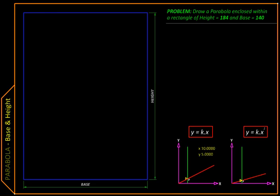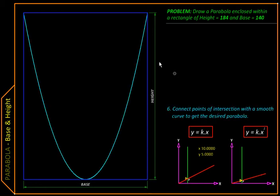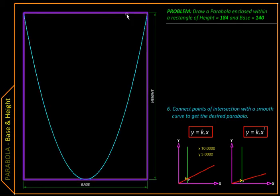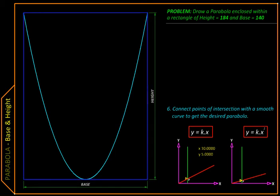Here, we will be looking at a construction for a parabola like this, whose base or the horizontal extent and height, that is the vertical extent, is given to us.